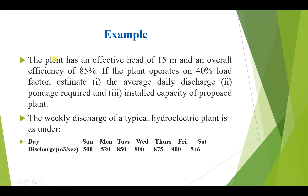The last example: a plant has an effective head of 15 meters and overall efficiency of 85%. If the plant operates on a 40% load factor, estimate the average daily discharge, the pondage required, and the installed capacity of the proposed plant. The weekly discharge data is given: Sunday has 500 m³/s, and Monday, Tuesday, Wednesday, Thursday, Friday, and Saturday values are all provided.